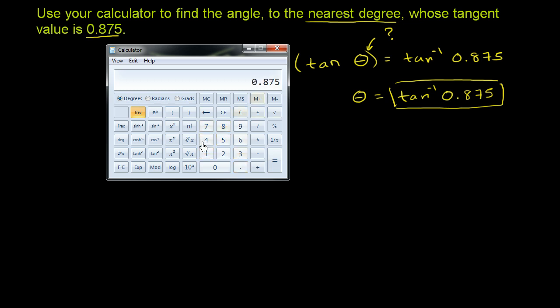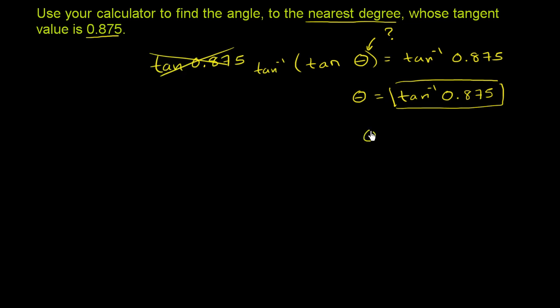And we're going to take the inverse tangent of it. So take the inverse tangent. We already know that we're in degree mode and we want to round to the nearest degree. So if we round to the nearest degree, we get 41 degrees. So theta is approximately - it's not exactly, we're rounding - 41 degrees.